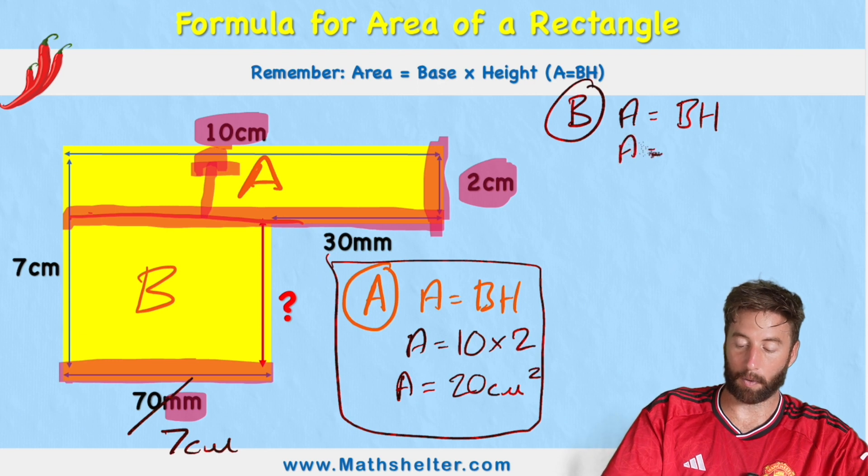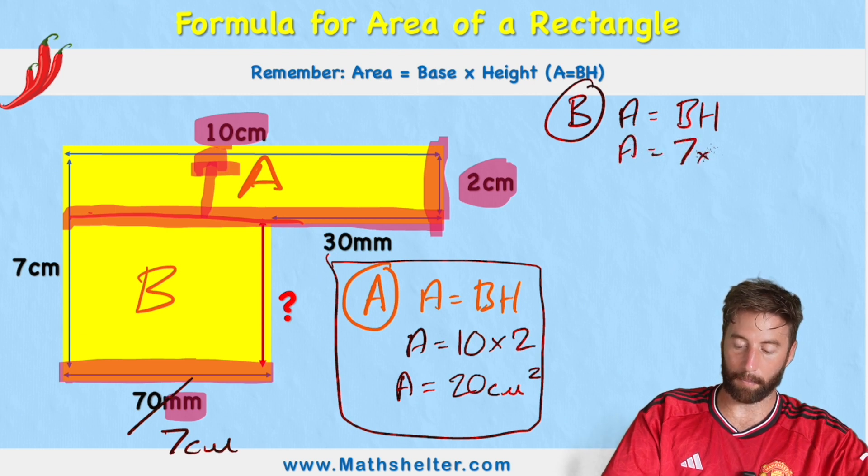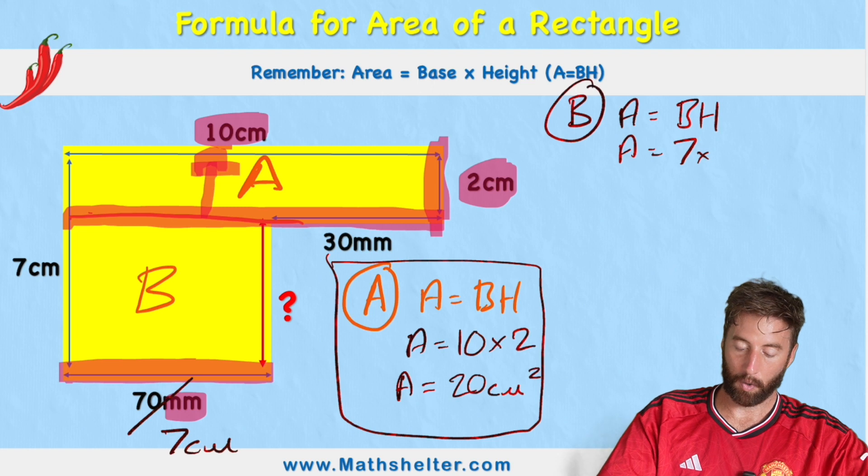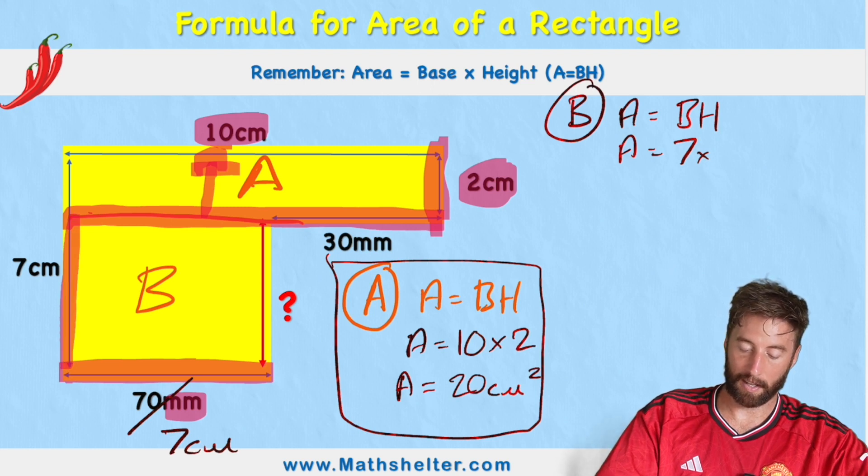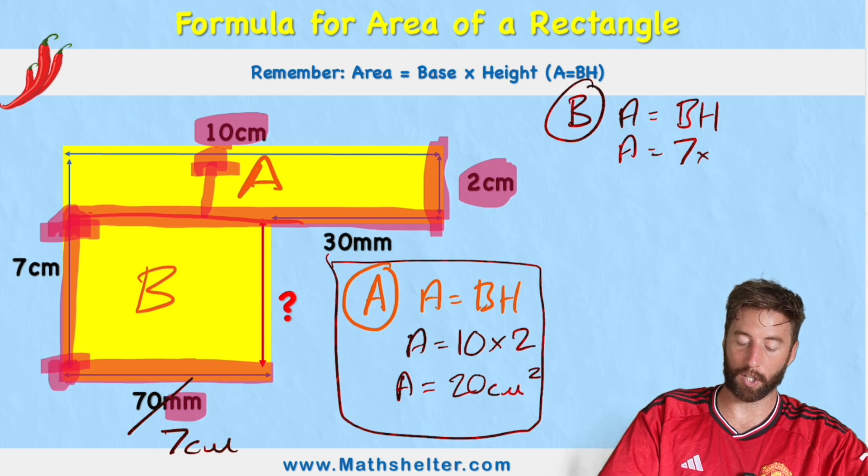So my area equals 7 times the height, which is going to be this length just here. Because remember, we only need to go to that line there because this part would be part of shape A.